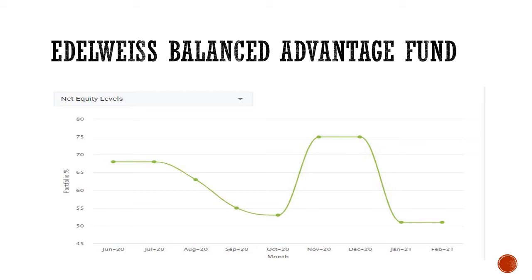Then in November we have certain allocations, and in December we have further changes. We can see performance data across these periods. You can look at this as a dynamic asset allocation strategy with varying percentage allocations over time.